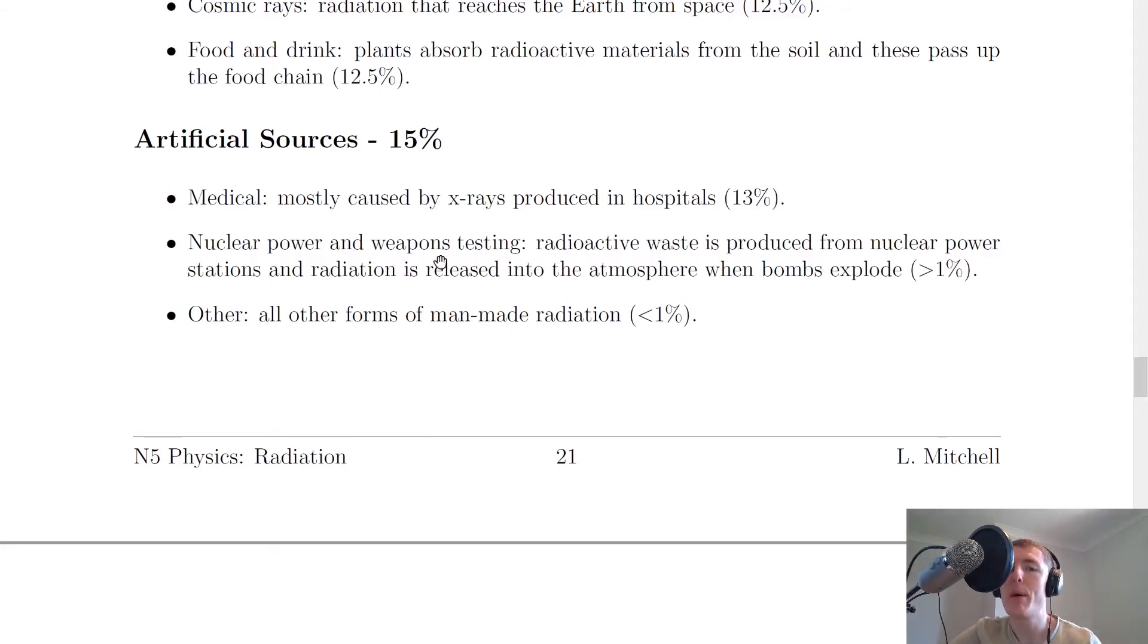And nuclear power and weapons testing. So radioactive waste is produced from nuclear power stations, and radiation is released into the atmosphere when bombs explode. So this contributes just over 1%. And then other sources, which are all other forms of man-made radiation, contributes less than 1%.